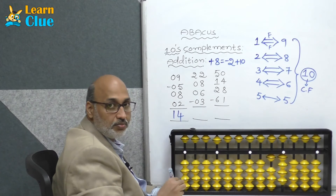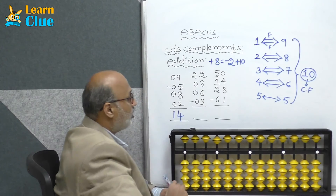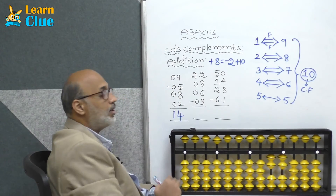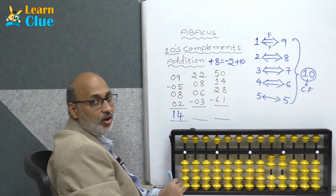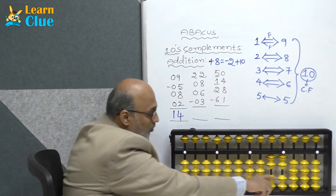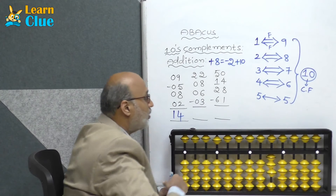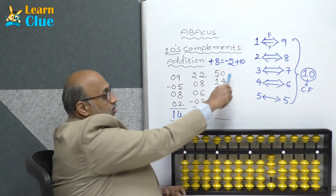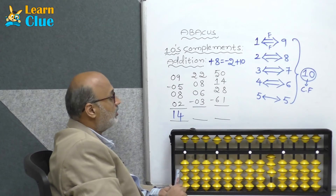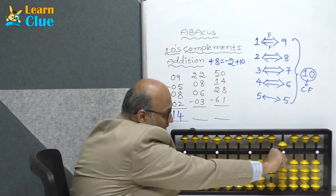Let's see the next problem: 22. Plus 8 — who is the friend of 8? 2. So minus 2 plus 10. Now they are asking plus 6, which is direct.